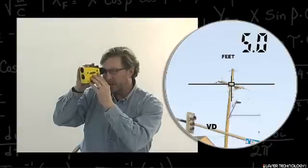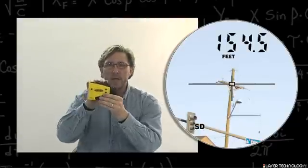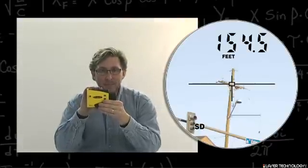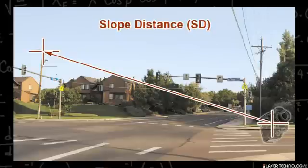When you look through the screen, hit the down arrow one more time, and it will say SD. That is the actual slope distance or line of sight that we shot.